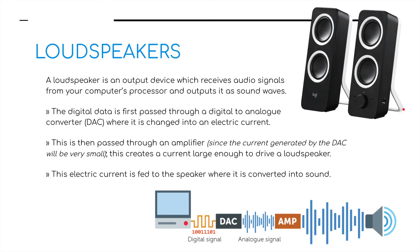We move on to loudspeakers. A loudspeaker is an output device which receives audio signals from the computer's processor and outputs them as a sound wave. The digital data is first passed through a digital-to-analog converter, a DAC, where it is changed into an electric current. This is then passed through an amplifier to increase the sound, creating a large enough signal to drive the loudspeaker. The electric current is fed to the speaker where it is converted into sound.